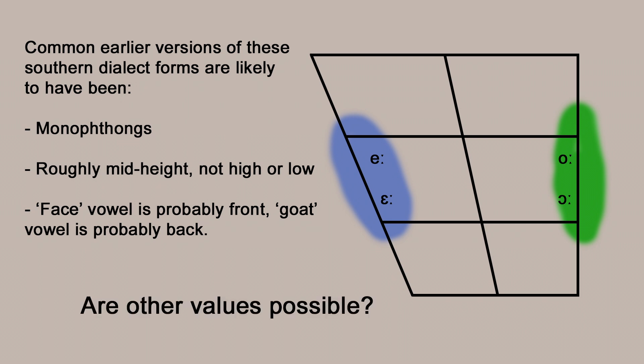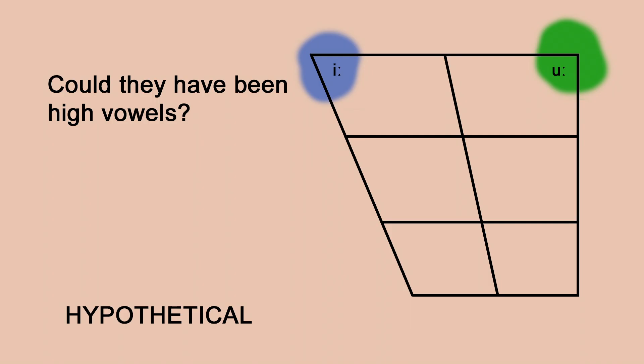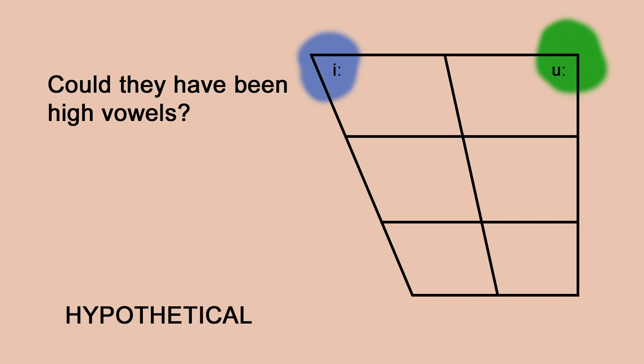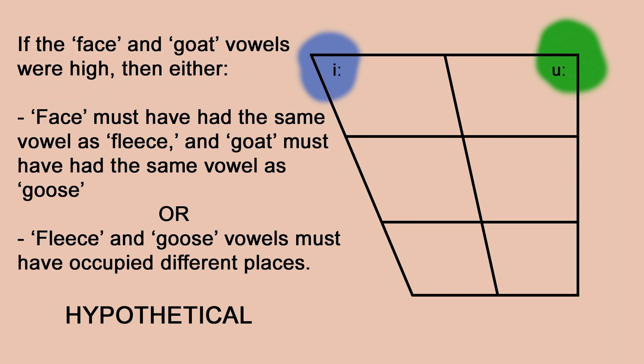Let's look at some alternative possibilities. What if we're wrong about these vowels being mid-height — could they actually be high vowels? Well, there are already two vowels in roughly those positions: the fleece vowel and the goose vowel, and all evidence points to them being in roughly these positions 300 years ago. If you want to suggest face and goat are high vowels, you'd be suggesting either that face had the same vowel as fleece and goat had the same vowel as goose — a merger — or that fleece and goose were in different positions.